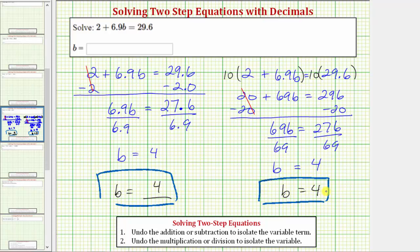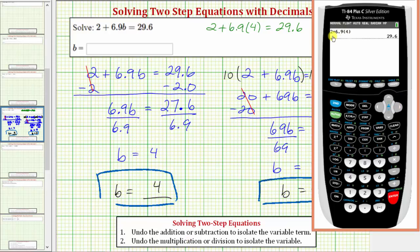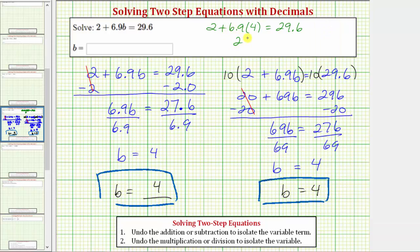Before we go though, let's verify our solution by substituting 4 for b in the original equation. Performing the substitution we would have 2 plus 6.9 times b which is 4 equals 29.6. Let's make sure the left side of the equation is equal to 29.6. And let's use the calculator. I've already done this. Notice how 2 plus 6.9 times 4 is 29.6. So the left side equals 29.6. Which equals the right side. Which verifies our solution is correct.